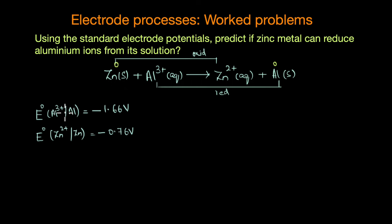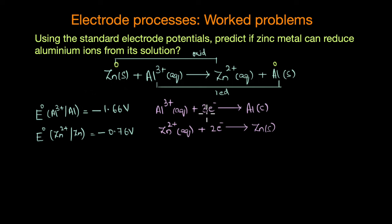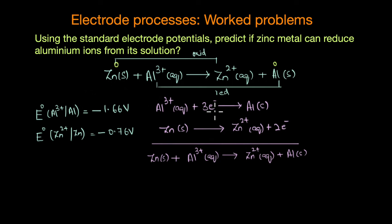The standard electrode potentials are: E°(Al³⁺/Al) = −1.66 V and E°(Zn²⁺/Zn) = −0.76 V. These are standard reduction potentials, corresponding to Al³⁺ + 3e⁻ → Al and Zn²⁺ + 2e⁻ → Zn. Since aluminium is being reduced we use −1.66 V directly, but since zinc is being oxidized, we reverse the sign of its reduction potential: −0.76 V becomes +0.76 V.